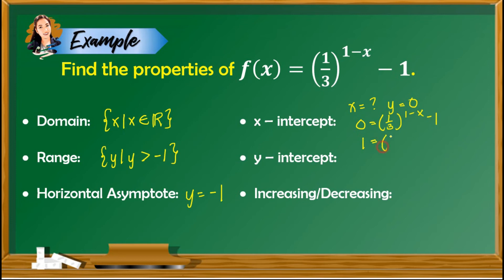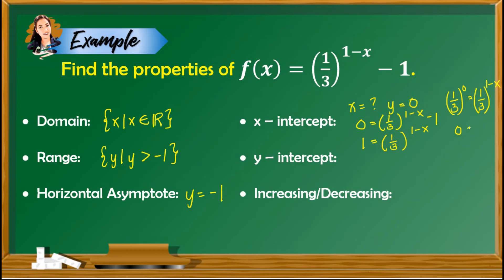Isolating gives us 1 equals 1 third raised to 1 minus x. The left side is 1, which we can rewrite as 1 third raised to the power of 0, since any value raised to 0 gives us 1. Since the base on the right is 1 third, we use 1 third as the base on the left. So we have 1 third raised to 0 equals 1 third raised to 1 minus x. Using the property of exponential equations, when the bases are the same we equate the exponents: 0 equals 1 minus x, giving x equals 1.